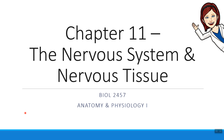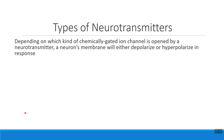Hi everybody, Dr. Aulis here. In this short video we're going to talk about the two main types of neurotransmitters that neurons use to communicate with each other, as well as the effects that these types of neurotransmitters have on their resting membrane potential, which is their normal membrane charge.